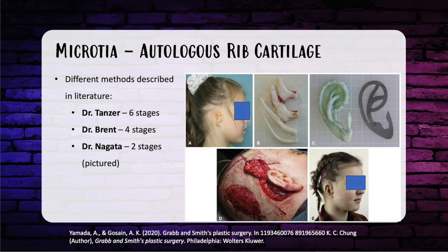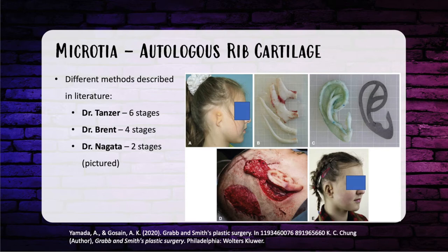For autologous rib cartilage, multiple techniques have been described by Dr. Tanzer, Dr. Brent, and Dr. Nagata. Dr. Tanzer originally described the operation in 1958 in six stages. Dr. Brent advocated starting repair at age four to six and broke it into four stages: stage one — the ear framework is fabricated from contralateral rib cartilage and placed in a subcutaneous pocket; stage two — lobule transposition rotation; stage three — projection created by elevating the ear construct with full-thickness skin grafts and banked cartilage; stage four — tragus reconstruction and conchal deepening.